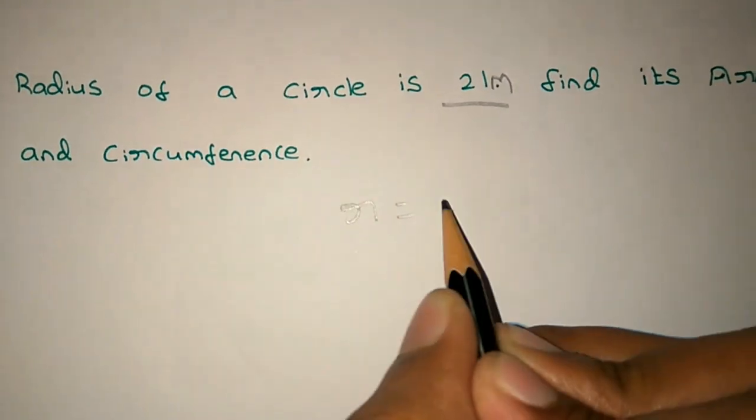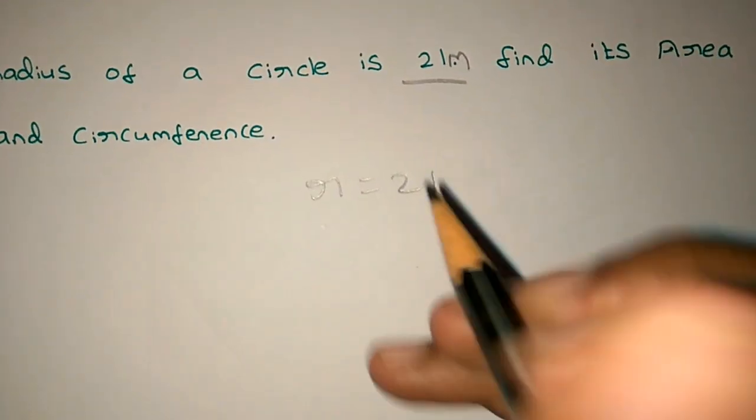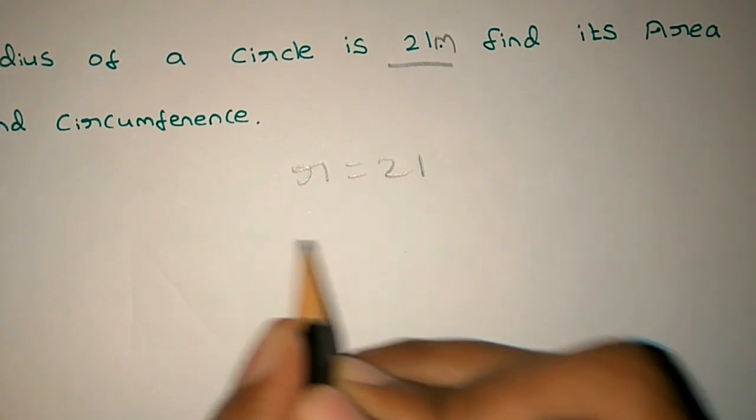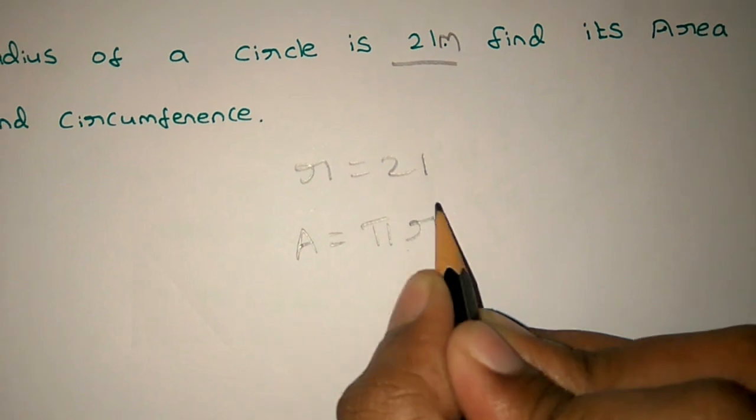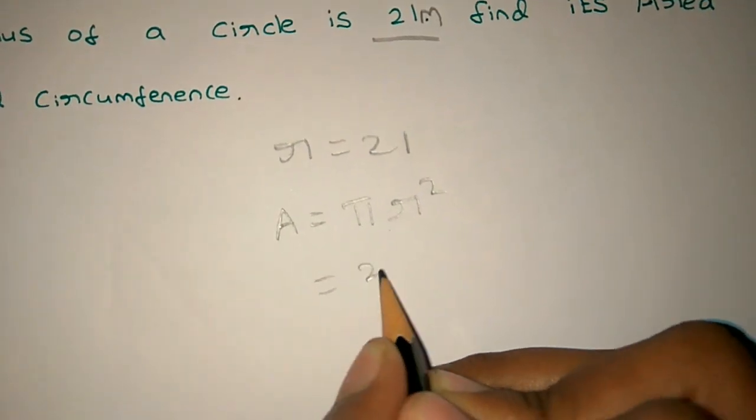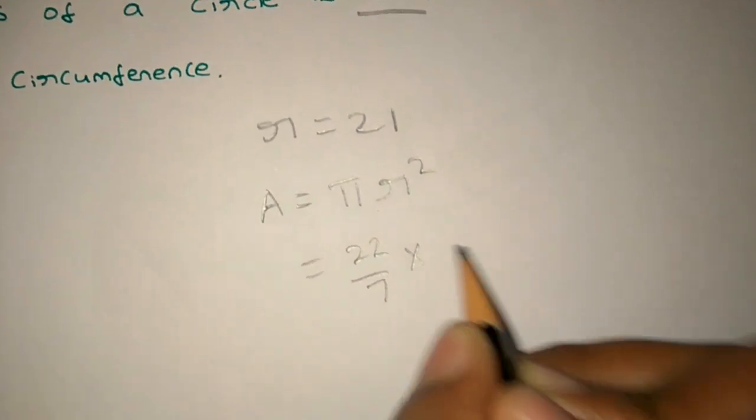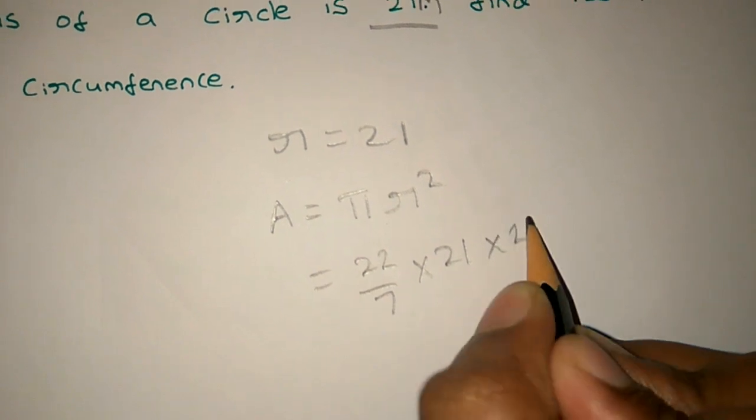We know the radius R is 21. The area is pi R square. Area equals pi R square. Pi is 22 by 7 into R square is 21 into 21.